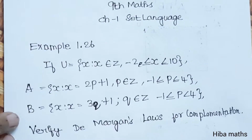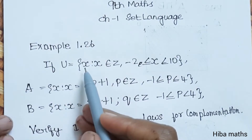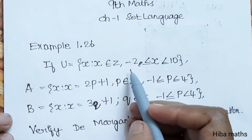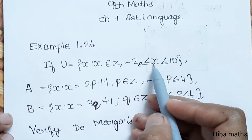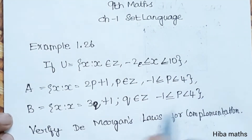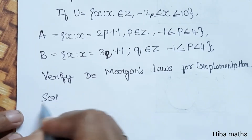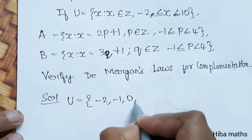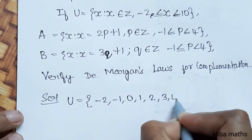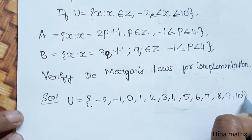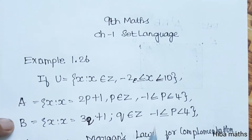Example 1.26. If U is equal to {x such that x is an element of Z, where x is greater than or equal to minus 2 and less than or equal to 10}, then U is equal to {-2, -1, 0, 1, 2, 3, 4, 5, 6, 7, 8, 9, 10}.